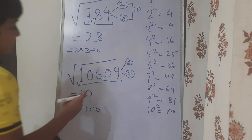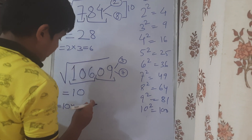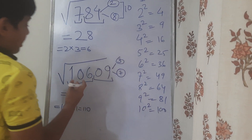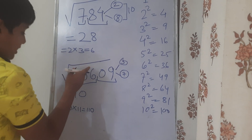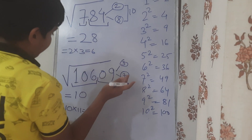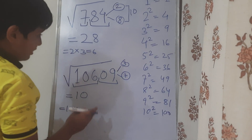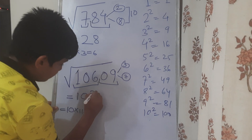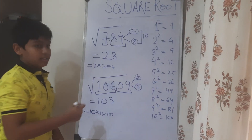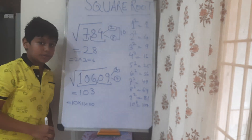Now, if 106 is smaller than 110, we take 3. If 106 is bigger than this number, we take 7. Since 106 is smaller than 110, we take 3. So, this is the square root. Thank you for watching and please subscribe.